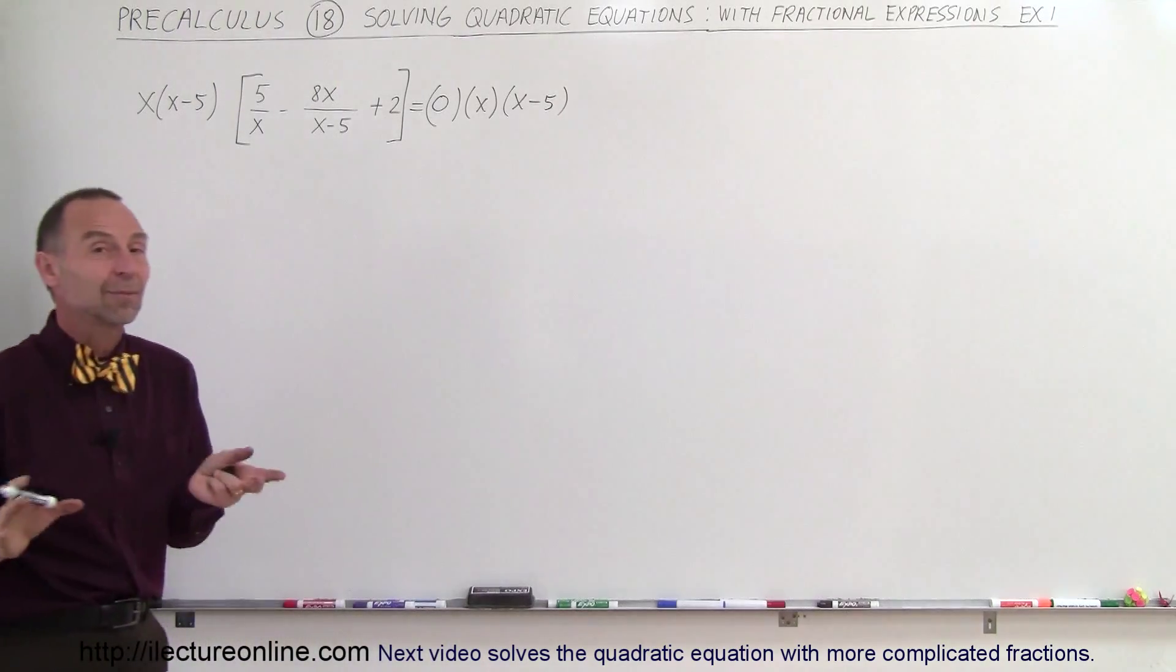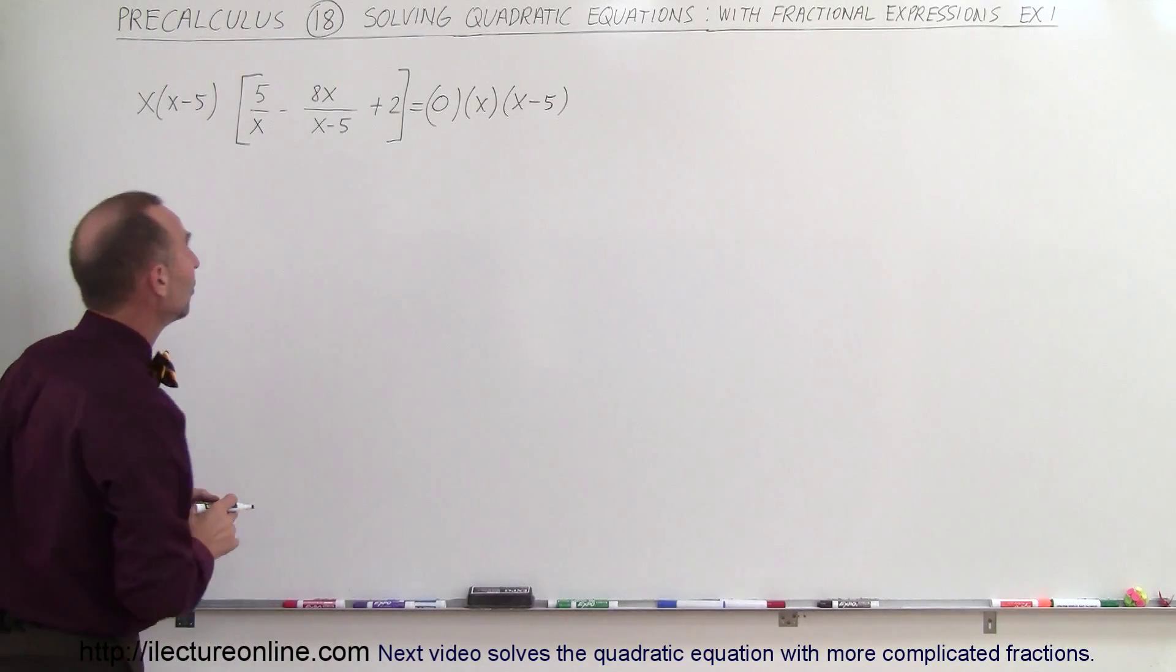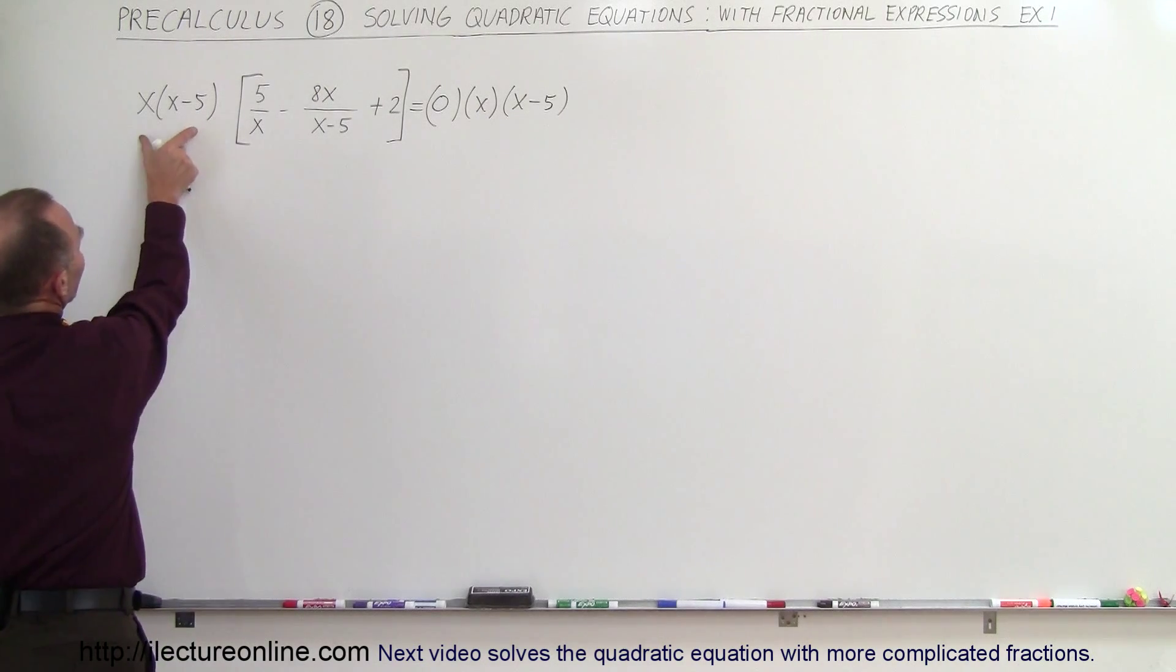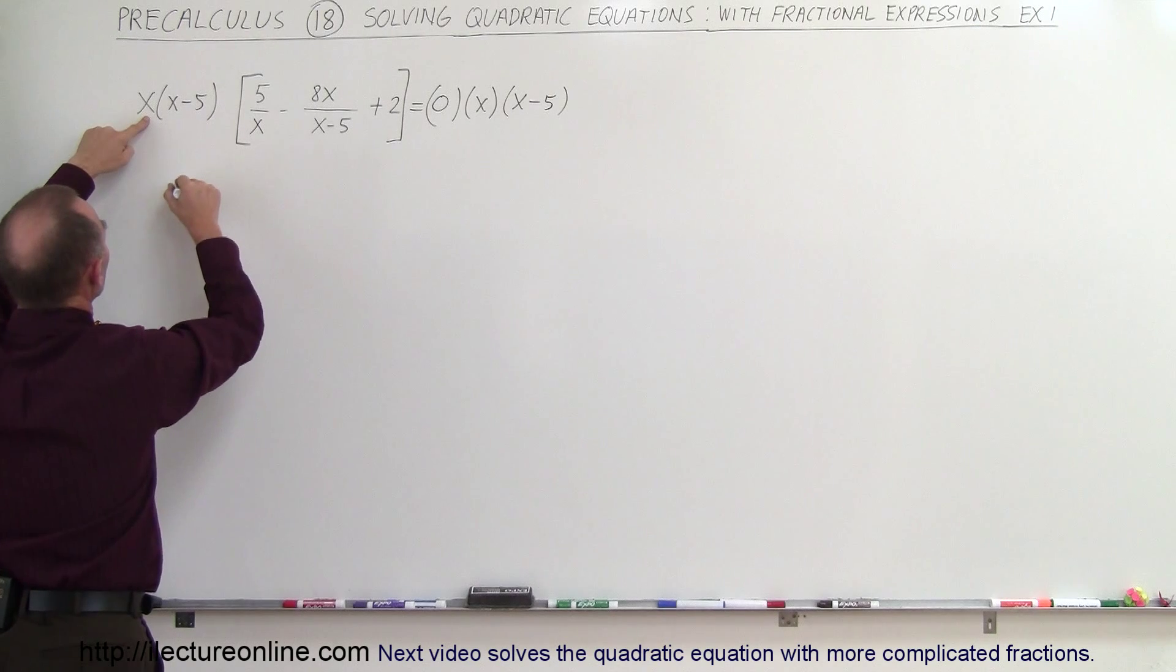Now on the right side, since we're multiplying times 0, that just stays 0, but on the left side we end up with something a little bit different. Notice when we multiply this times this, the x's will cancel out, and we're left with 5 times x minus 5.